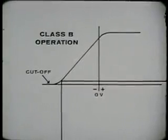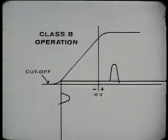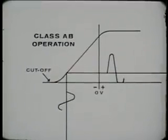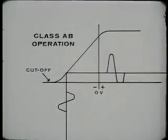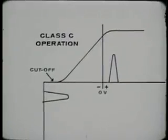If we bias the tube at or near cutoff, it is a class B amplifier. Note that plate current flows for only slightly more than 180 degrees of the input cycle. If we bias the tube between class A and class B, we have a class AB amplifier. Again, note the relationship between plate current flow and the input cycle. If we bias the tube below cutoff, we have a class C amplifier. This class of amplifier is almost exclusively limited to radio frequency applications.